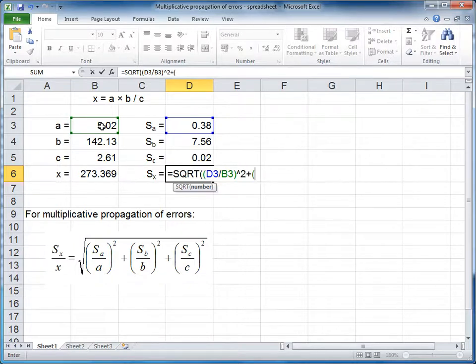Plus the error of B, divided by the magnitude of B, close brackets, and square.